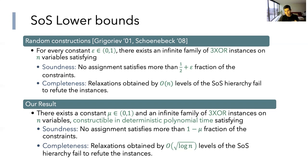The instances I'll discuss are constructible and explicit — deterministic polynomial time. However, they are weaker in some ways: the soundness guarantee is that no assignment satisfies more than one minus mu fraction (think of mu as 0.1), while the SOS hierarchy still cannot refute them. But this is only proved for square root log n levels of the SOS hierarchy, as opposed to omega of n levels in the previous random constructions.